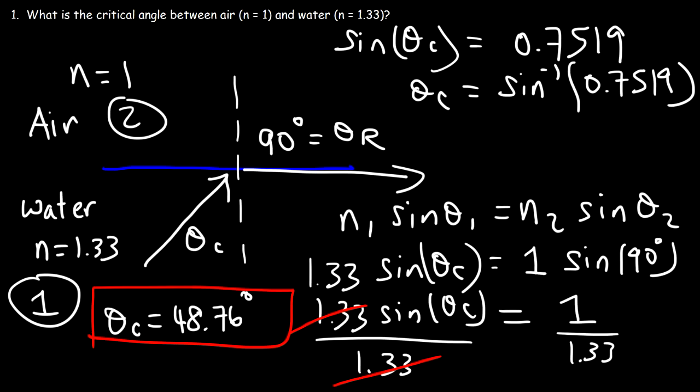So if the incident angle was 30 degrees, refraction will occur. If the incident angle equals the critical angle — 48.76 degrees — then the angle of refraction will be 90°. And if the incident angle was 60 degrees, which is greater than the critical angle, then total internal reflection will occur with no refraction whatsoever. Let me give you a visual illustration of what I was saying.